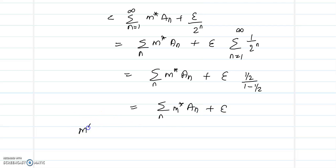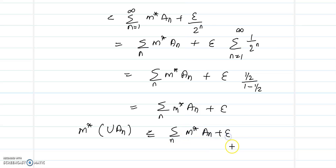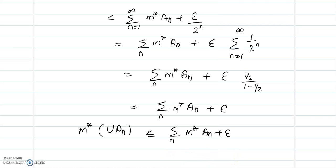So we have M*(∪Aₙ) ≤ Σ M*(Aₙ) + ε. Since epsilon can be any arbitrary positive number, this inequality will hold for any epsilon greater than 0. Therefore, we conclude that M*(∪Aₙ) ≤ Σ M*(Aₙ), completing the proof of countable subadditivity of the outer measure.